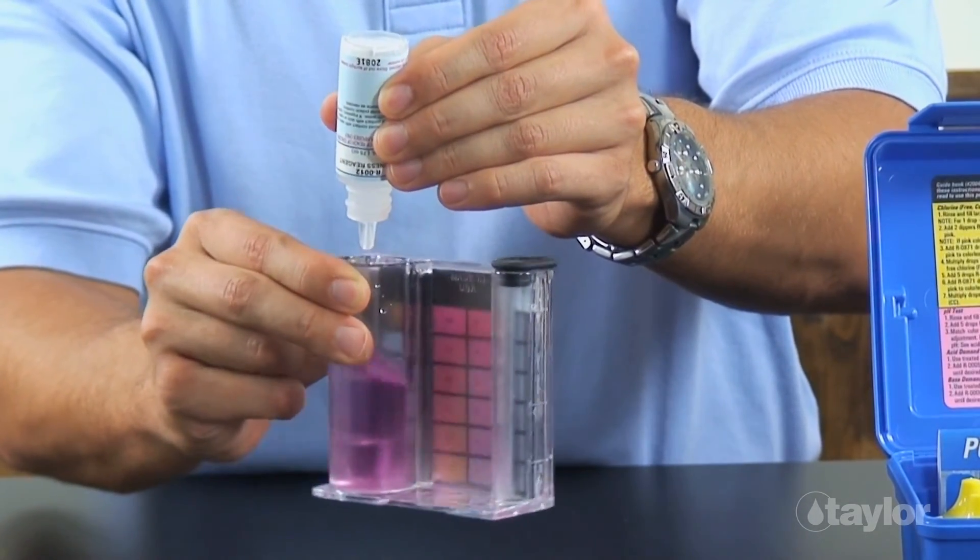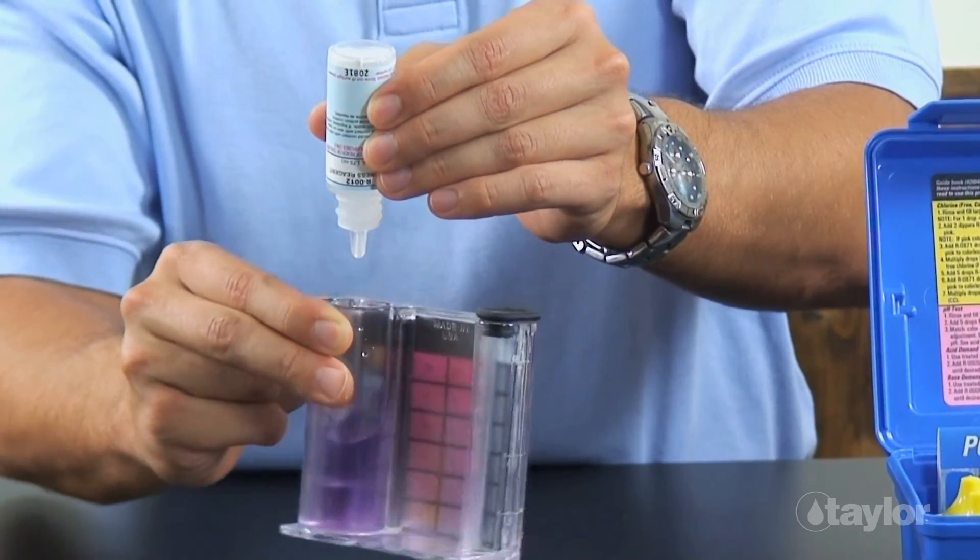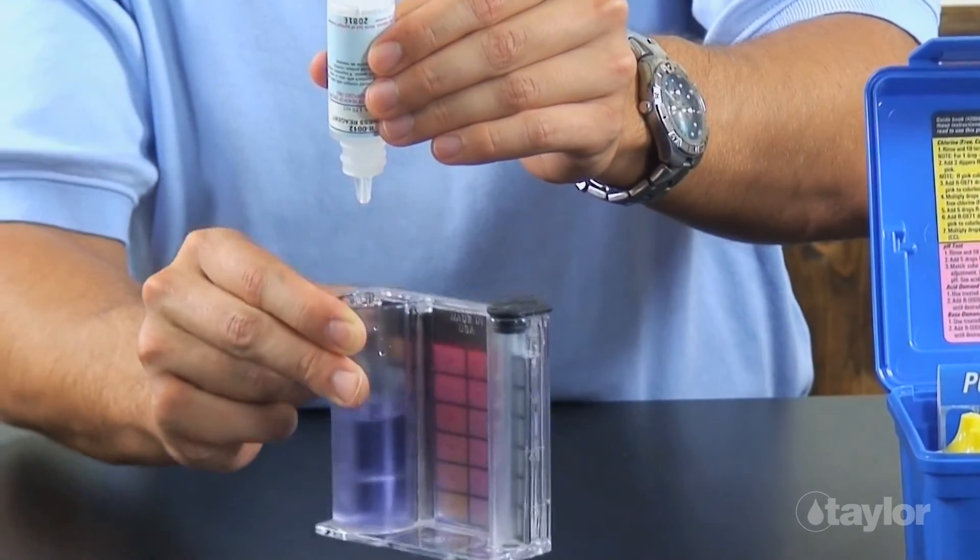Add the number of drops used in this step to the number of drops reagent 12 used at the beginning of the test, then multiply the result by 10. Record the result as parts per million calcium carbonate.